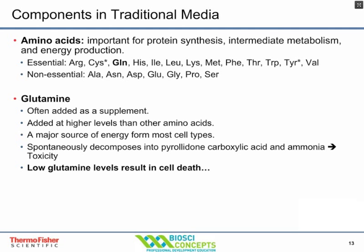Amino acids are important in cell culture media. If you look at the list of essential and non-essential amino acids, the list may differ from a traditional biochemist's list, because if a cell does not make enough of an amino acid to be useful, it's still considered essential. Cysteine, glutamine, and threonine are considered non-essential in a biochemistry textbook but are essential in cell culture, because cells don't make enough to be useful.